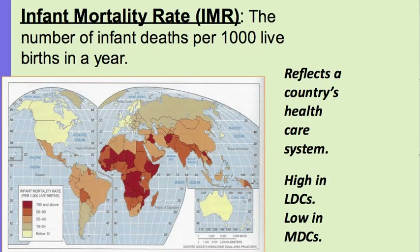Infant mortality rate is the number of infant deaths — babies one year old and younger — per 1,000 live births. An infant must be born alive and then die within the first year. This reflects the country's healthcare system, how well a country takes care of its babies. Infant mortality rate tends to be high in places like Africa, Asia, the Middle East, and parts of Latin America, and much lower in Europe, North America, and Australia.